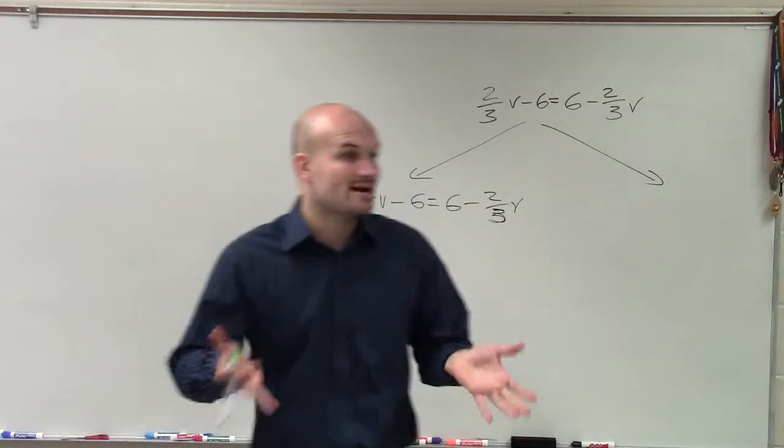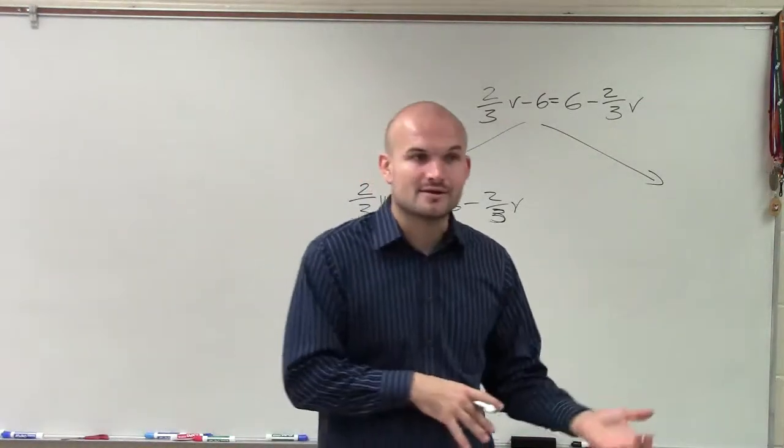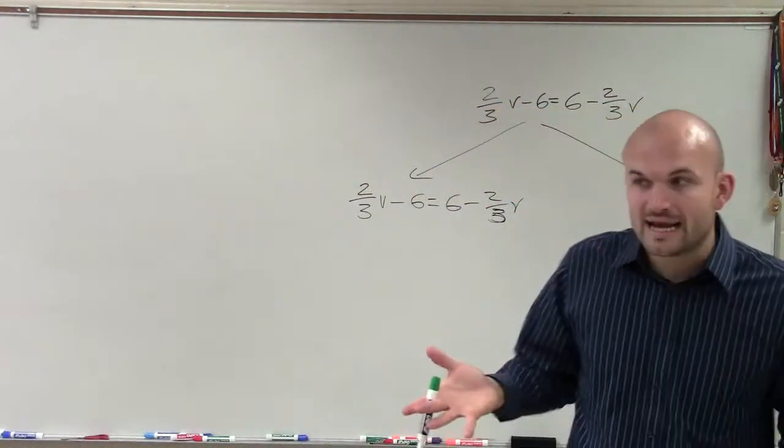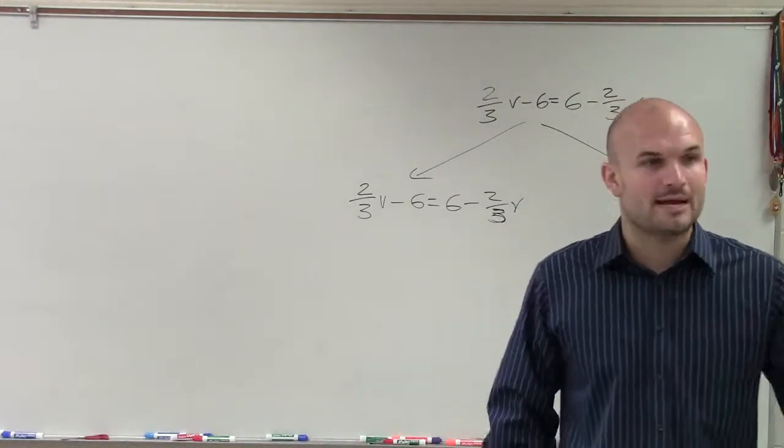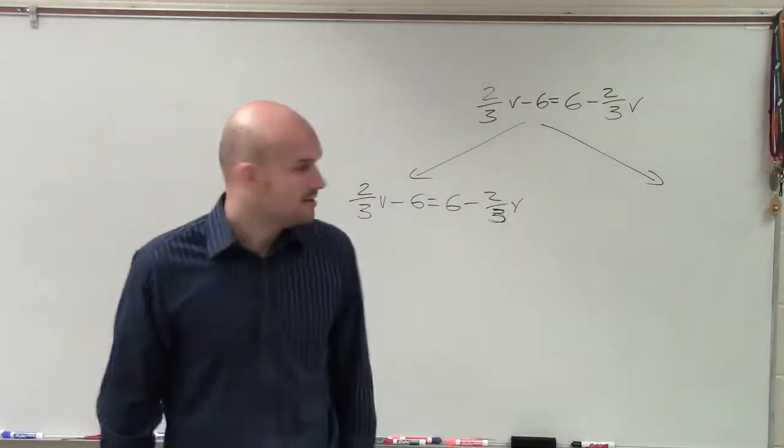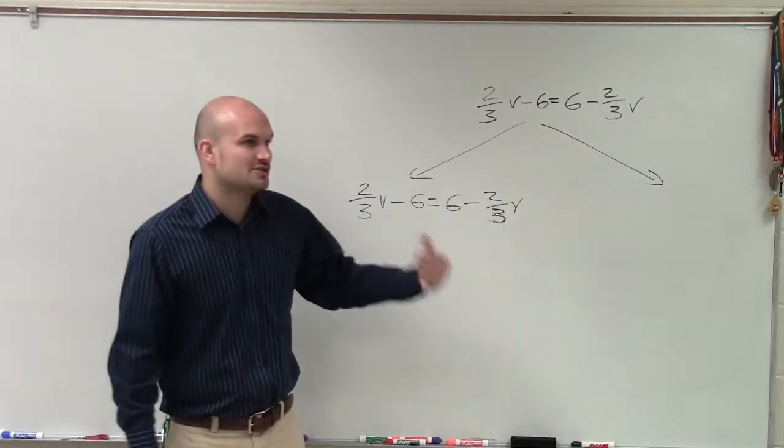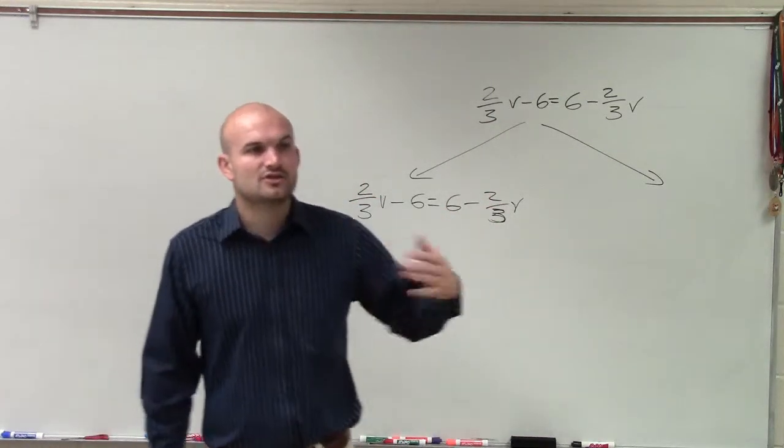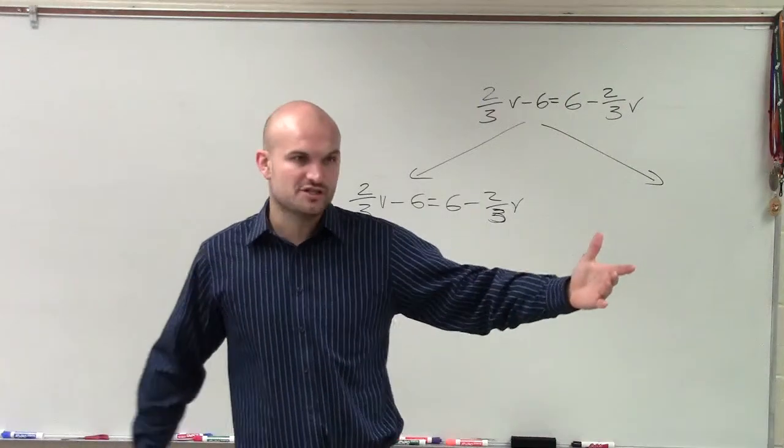So I need to say, how am I going to get the variables on the same side? Well, what I need to do is I need to eliminate one of the variables. And I can eliminate by adding its inverse. So what I like to do usually is eliminate the smaller of my coefficients with my variable.